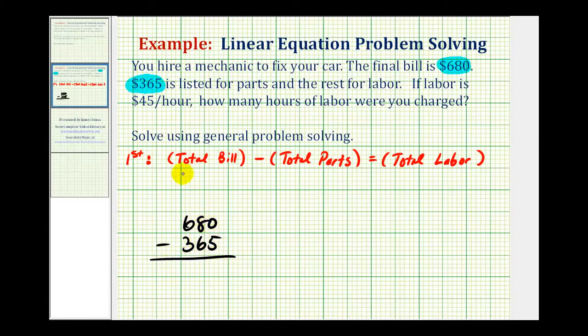We'd have to borrow from this 8, changing it to a 7, which would give us 10 ones. So now we have 10 in the ones place value. 10 minus 5 is 5, 7 minus 6 is 1, 6 minus 3 is 3. So $315 is the total labor charge.